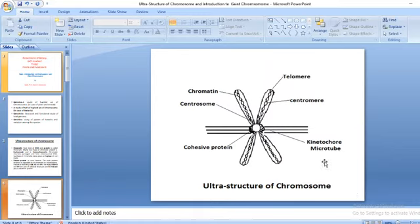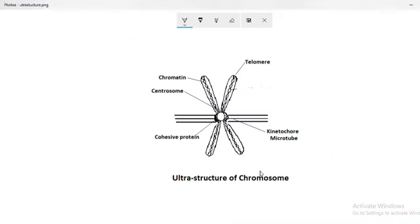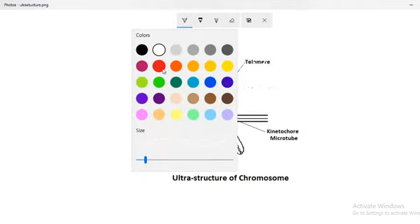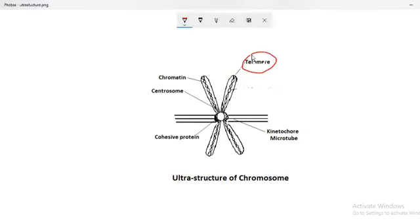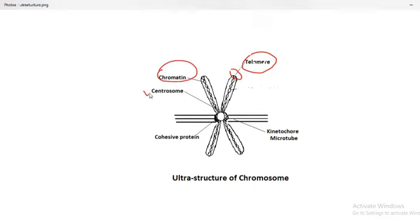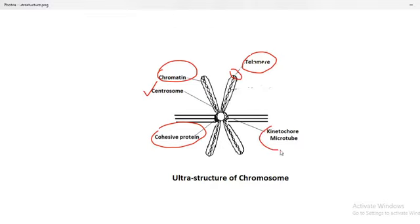The structure of the chromosome has different parts. The outermost part is called the telomere region — the ends of the chromosome are called telomeres. Apart from these, there is a centromere, that is the centrosome region containing the centromere, with cohesion proteins and kinetochore microtubules. These are the two sister chromatids.